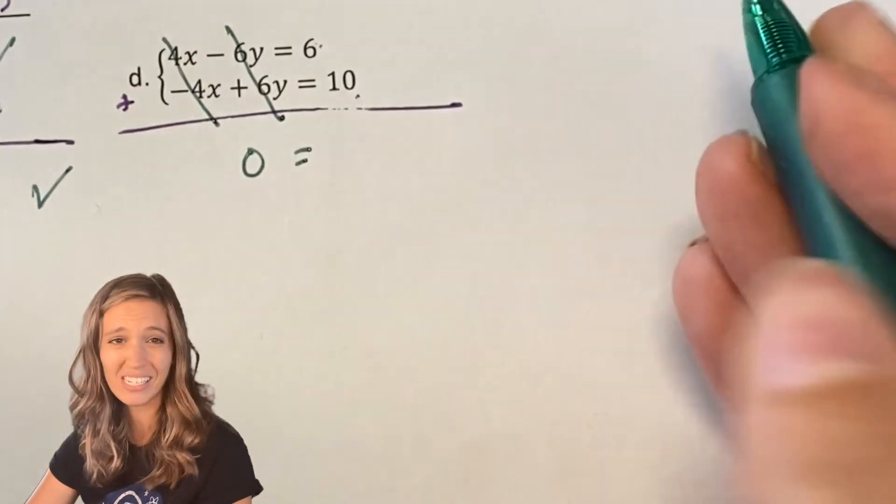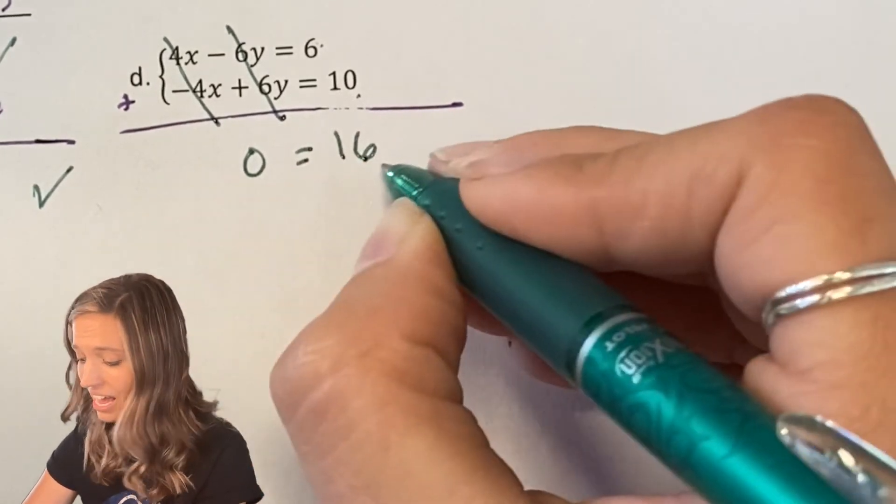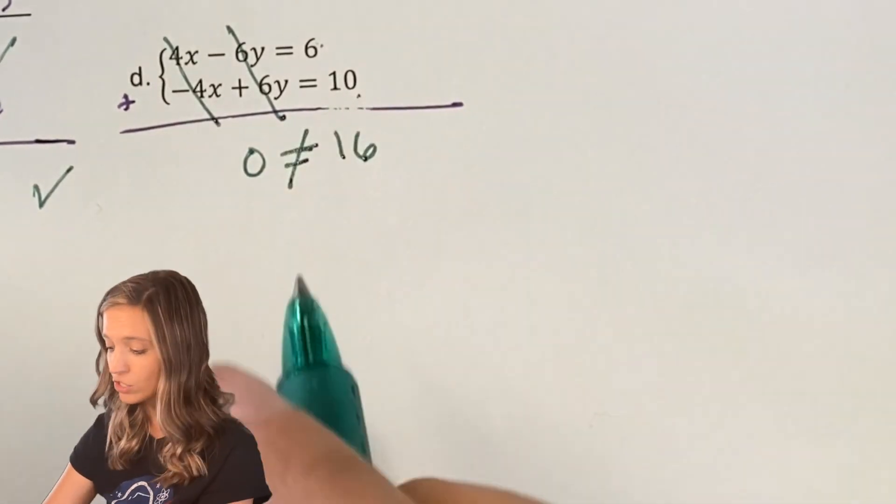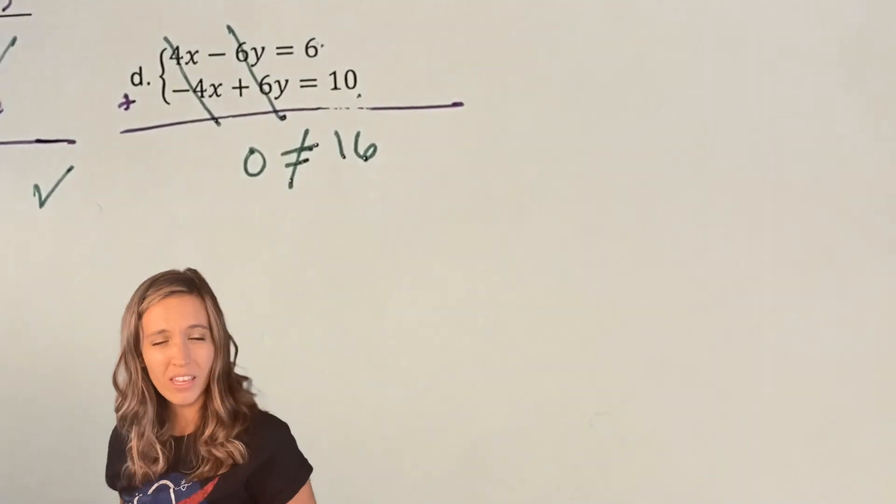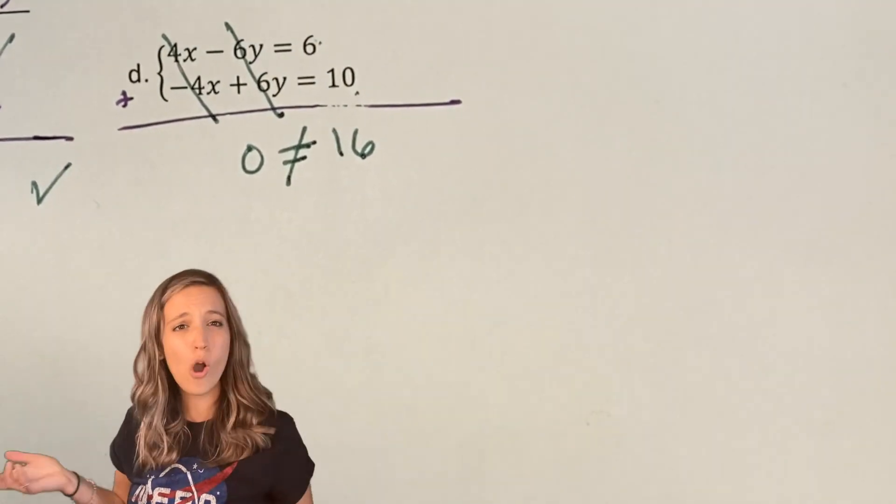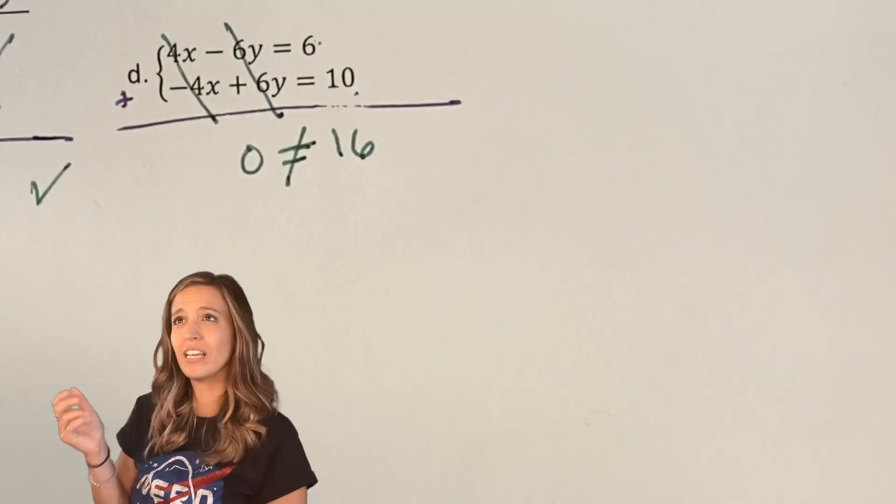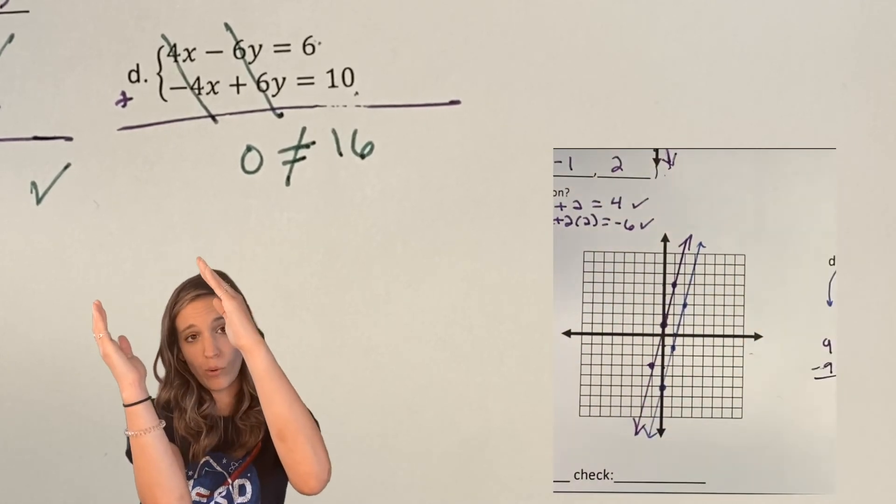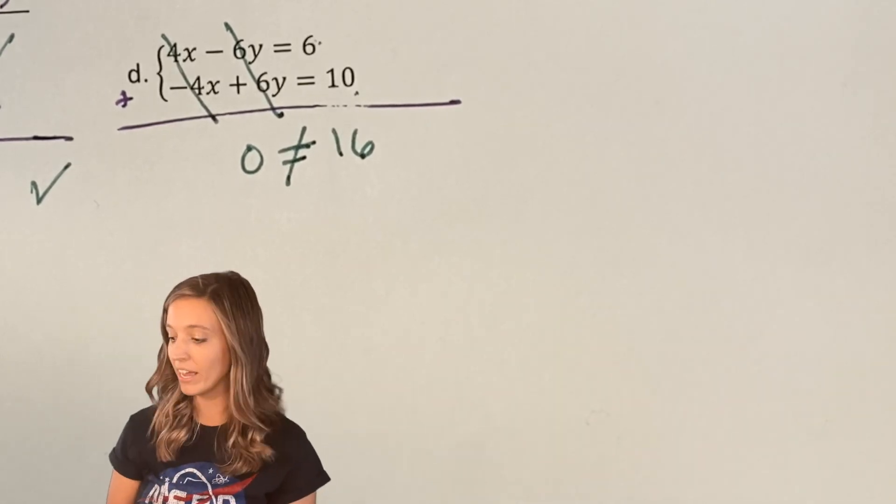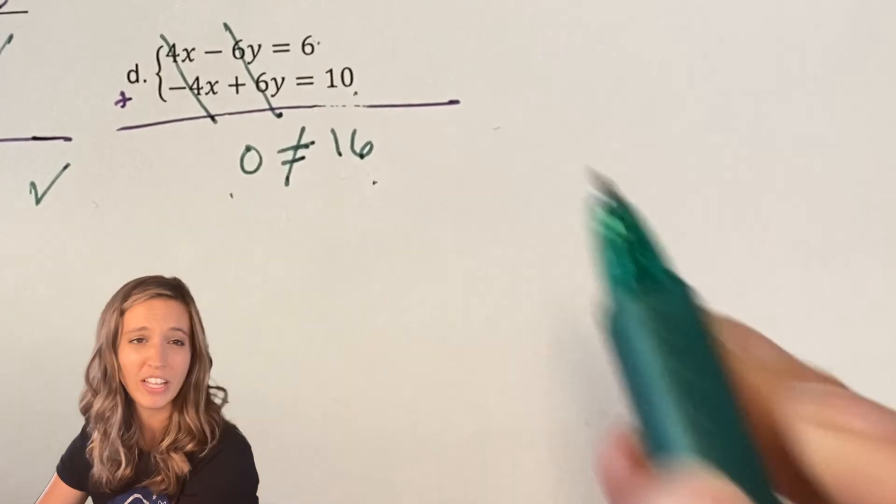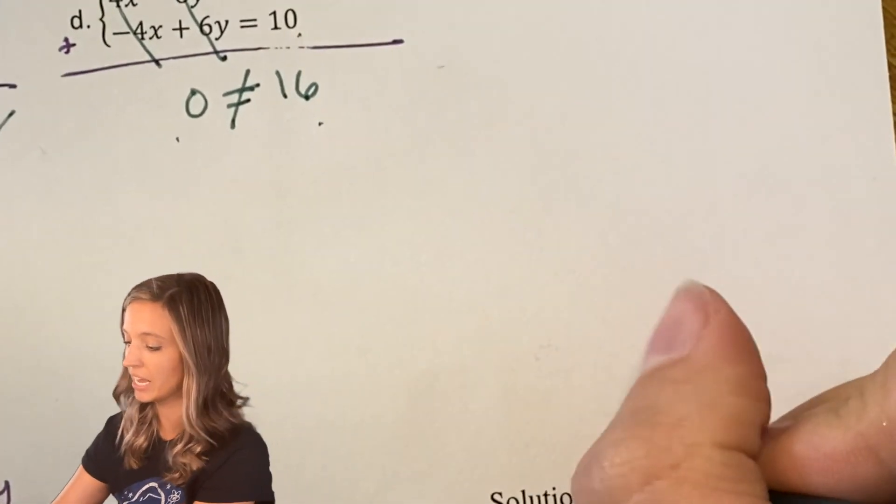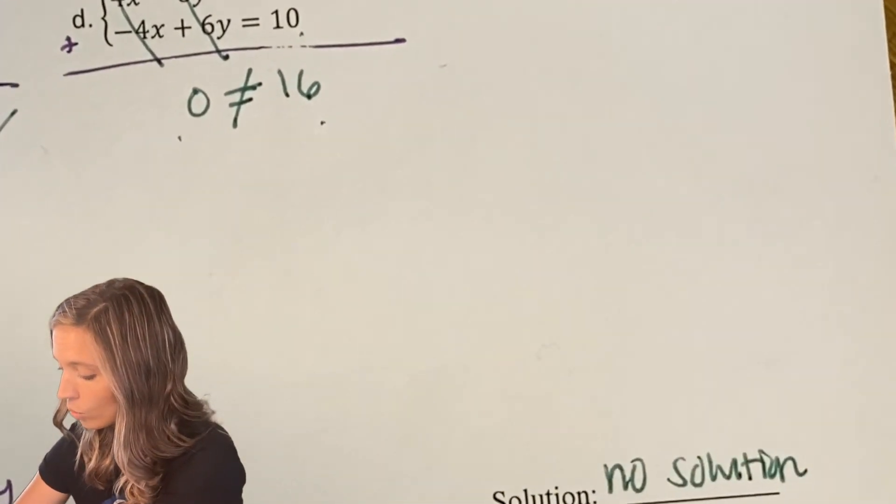Zero does not equal 16. That's totally not true. So what do you think that means? That means we have no solution. So graphically, that's when we had two parallel lines, right? So we had the same slope but different y-intercepts. So if you get a statement that's just not true as your ending answer, you're just going to say no solution.